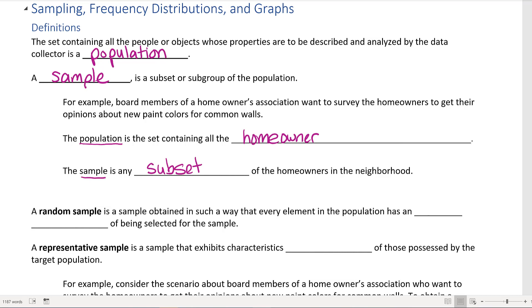A random sample is a sample obtained in such a way that every element of the population has an equal chance of being selected. A representative sample is a sample that exhibits characteristics typical of those possessed by the target population.